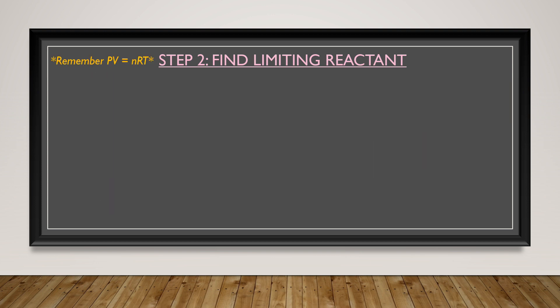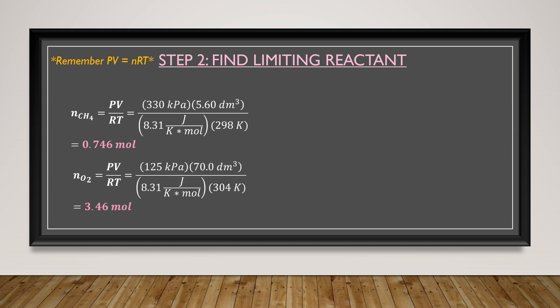Now, likewise, we need to determine whether CH4 or O2 is considered the limiting reactant. So, by using the ideal gas law, we can determine the number of moles of methane, which is 0.746 moles, and oxygen gas, which is 3.46 moles. Since 1 mole of methane needs 2 moles of oxygen gas, we need to multiply by the mole ratio, which gives us 1.49 moles of O2.